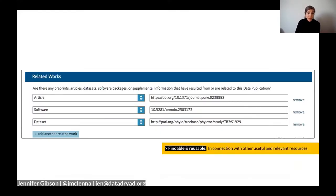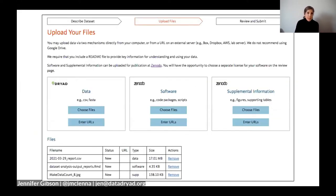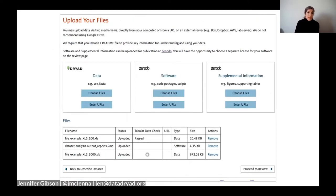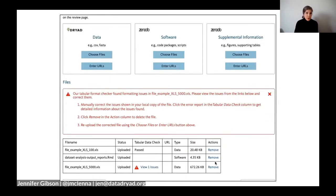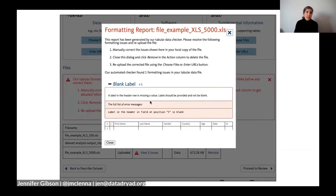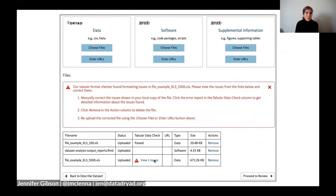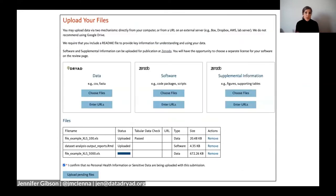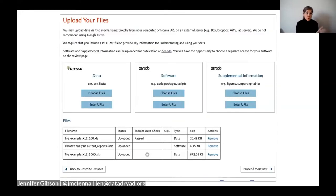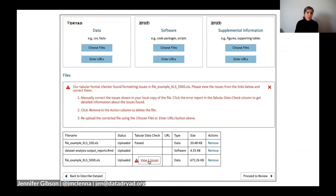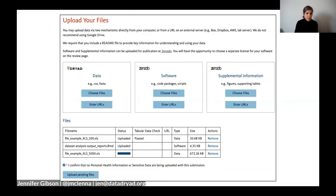If there are related files already out there, we ask the author to let us know, and if they need to load software or supplementary information in connection with the dataset, we make that easy through the Dryad submission forms. Through our partnership with Frictionless Data, we also check tabular data for basic errors before upload — things like blank headers or merged cells can cause problems for users trying to run the data later on, so Frictionless draws attention to those issues before the upload process is complete.